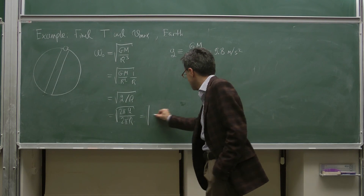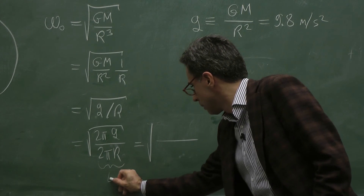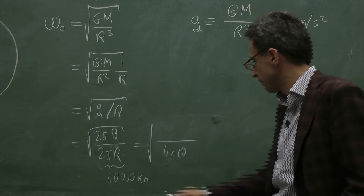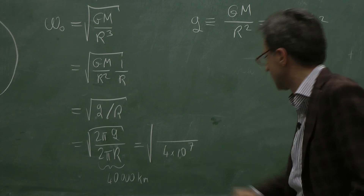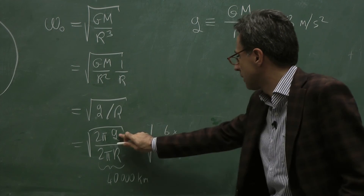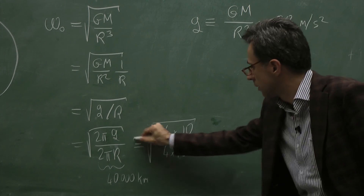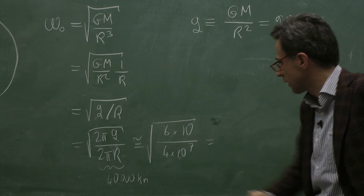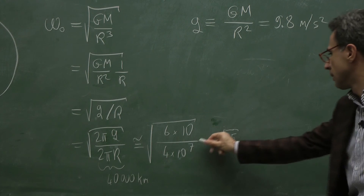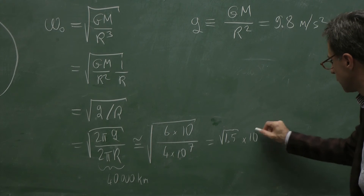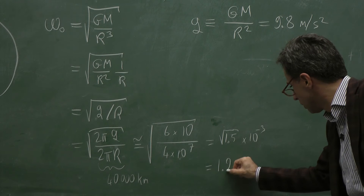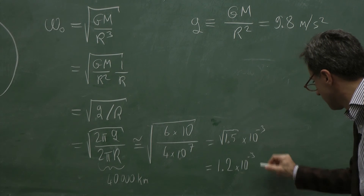Plugging in the numbers: 40,000 km is 4 × 10⁷ m, and 2π is approximately 6.3, so let's use 6. Then 6 divided by 4 is 1.5, and the square root of 1.5 times 10⁻⁷ gives us approximately 1.2 × 10⁻³ radians per second for omega_0.